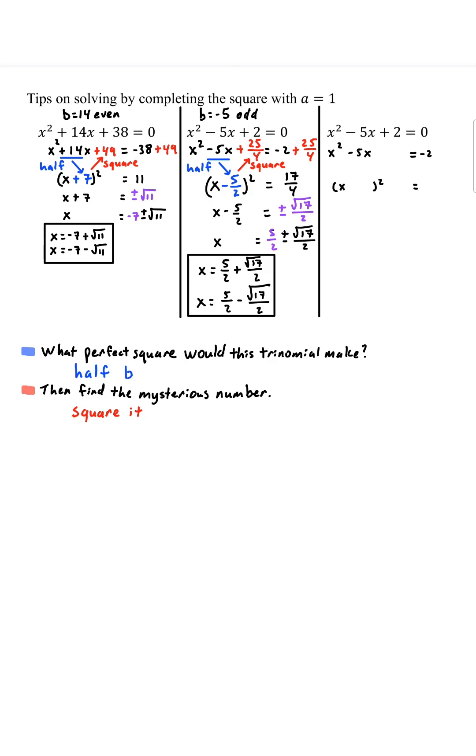What perfect square trinomial would this make? Half of negative 5, negative 2.5. We're going to square it. 6.25. Make sure you add to both sides. Negative 2 plus 6.25, 4.25.